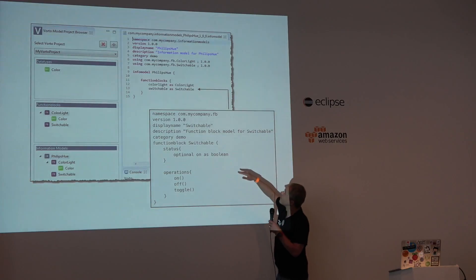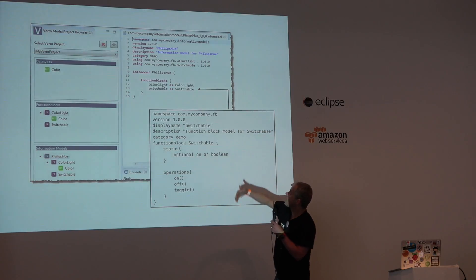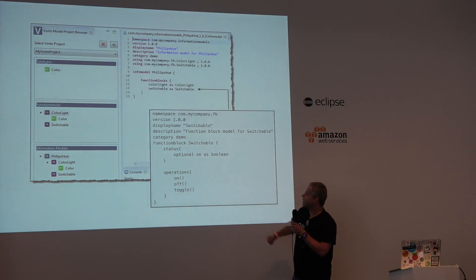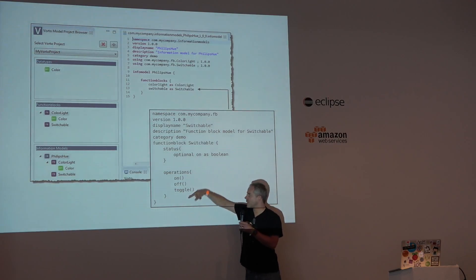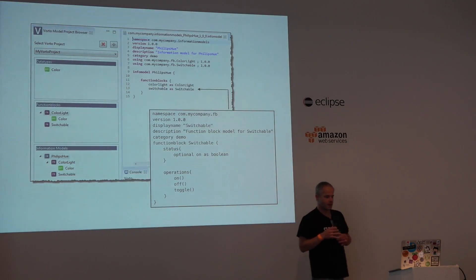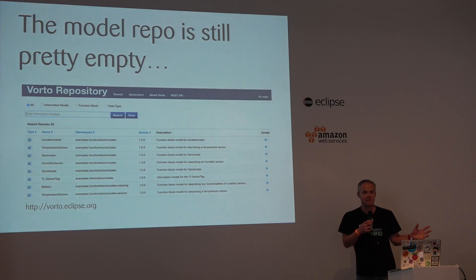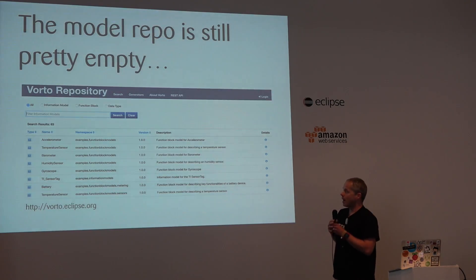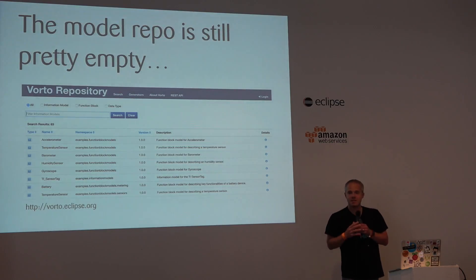Here's a screen grab of the editor you can use. The Vorto language is a DSL, and the editor helps you get your thoughts in order and produce a nicely structured info model. Here they are defining a Philips Hue light. The Hue light has a property which is switchable. In a different file, you would then describe what it means to be switchable — in that case there's an optional 'on' as a Boolean, and the operations you can do are: put it on, put it off, or toggle it. The model repo is still pretty empty. If you work for Bosch you have access to essentially everything that is internet-connected these days, because they are actively using it in production. For the rest of us, there are just a couple of examples in Eclipse at the moment.